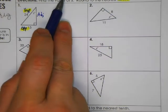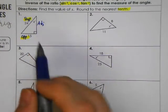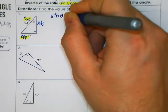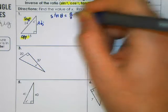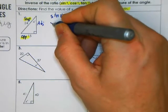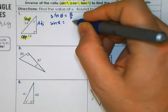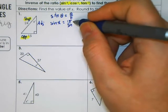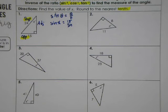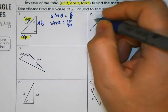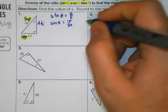Opposite and hypotenuse is the ratio for sine. So sine of the angle equals the opposite side over the hypotenuse. I'll say sine of X equals the opposite side, 15, over 24. Now 15 over 24 simplifies to 5/8ths, but it's not really going to make a big difference because we're doing this on the calculator and it will simplify for us.